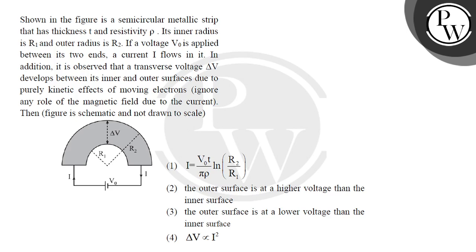So how to solve this question? We have 4 options given and this is a multiple correct type advanced question. First, find out the current. Current is found from the simple formula I = V/R. V is given as V0. But the resistance here is variable from R1 to R2 — the current in a semicircular metallic strip will be distributed.